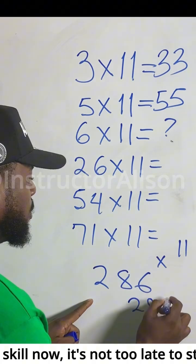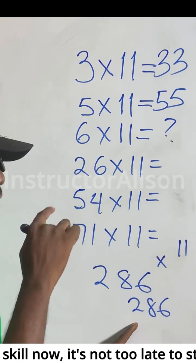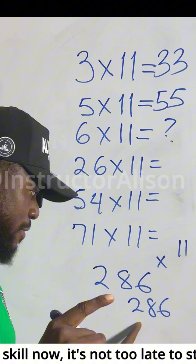So the answer now, 2, 8, 6. This is how they like to give you. On your points now, 26 times 11, you give me this answer.